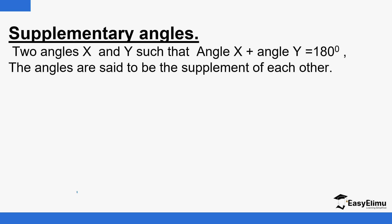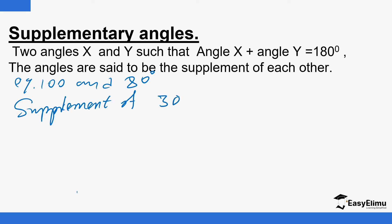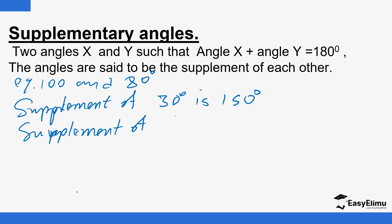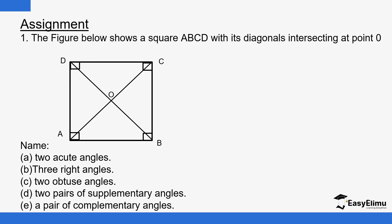We also have supplementary angles — two angles that add up to 180 degrees. Each of the two is said to be a supplement of the other. For example, the supplement of 30 degrees is 150 degrees, and the supplement of 50 degrees is 130 degrees. So long as the two angles add up to 180, they are supplementary. We have a few practice questions to end the lesson — goodbye until next time.